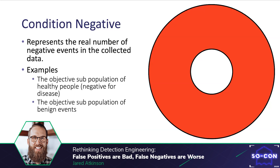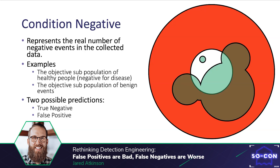Like condition positive, condition negative represents the real number of negative events in your collected data — shown by the red donut shape in the graphic, which is the population minus the condition positive circle. Applied to our examples, it represents the objective subpopulation of healthy people or the objective subpopulation of benign events. If we overlay our classification rule we see two possible situations relative to condition negative events: true negatives and false positives.